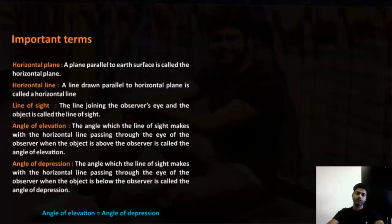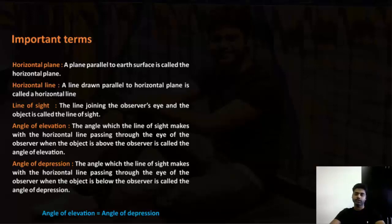Some important terms first. Horizontal plane: a plane parallel to the earth's surface or the ground is called a horizontal plane. Horizontal line: a line drawn parallel to the horizontal plane or the ground is called a horizontal line. Line of sight: the line joining the observer's eye and the object is called the line of sight.